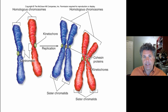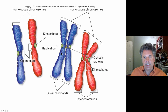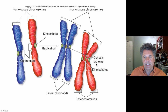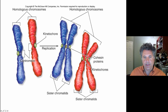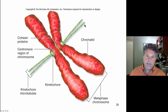Replication occurs during S phase, prior to condensation. When chromosomes condense at prophase of mitosis, each chromosome has already been replicated, so each chromosome actually consists of two daughter chromatids — sister chromatids. The sister chromatids are held together by cohesin proteins, which are replaced by condensin proteins in animals as condensation occurs. Kinetochores are where the microtubules of the spindle apparatus will attach, placing the chromosomes under tension to be drawn to opposite poles.